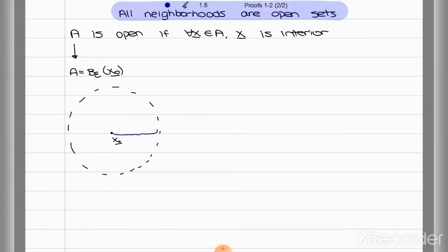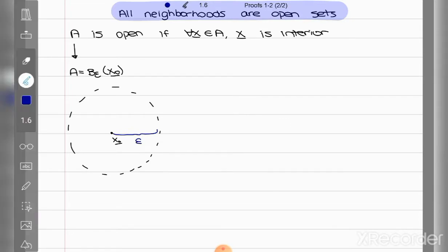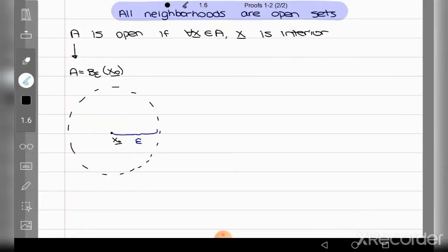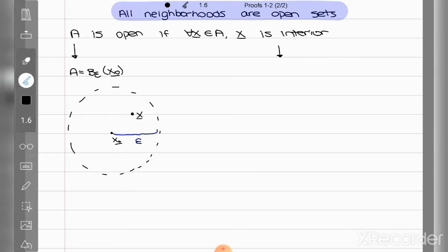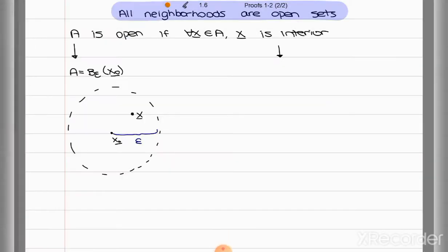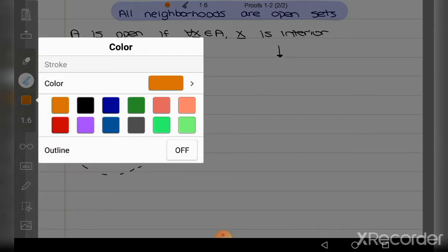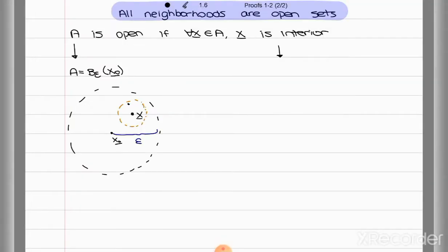This distance is epsilon. Because we need to show that every point in this neighborhood, which we can call x, is interior, we also need a definition of an interior point. That definition is that you can draw a neighborhood around this point — a smaller neighborhood — in which every single point is going to be in the set. So every point y in this smaller neighborhood belongs to our set, which is our larger neighborhood.